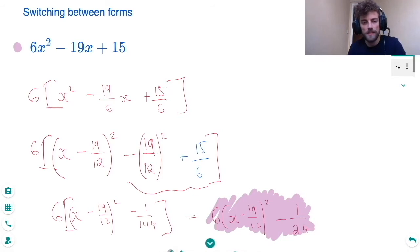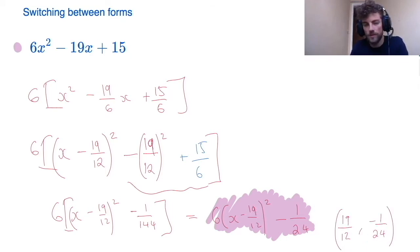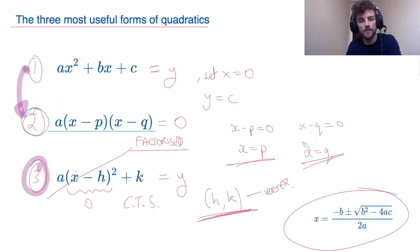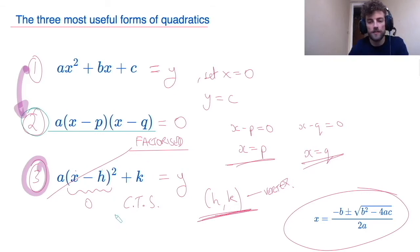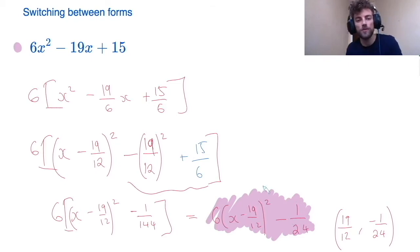From this form, it's really easy to read off the vertex. Flicking back — h, k is the vertex. Here my h is 19/12 and my k is minus 1/24. So that's form 1 to form 3.